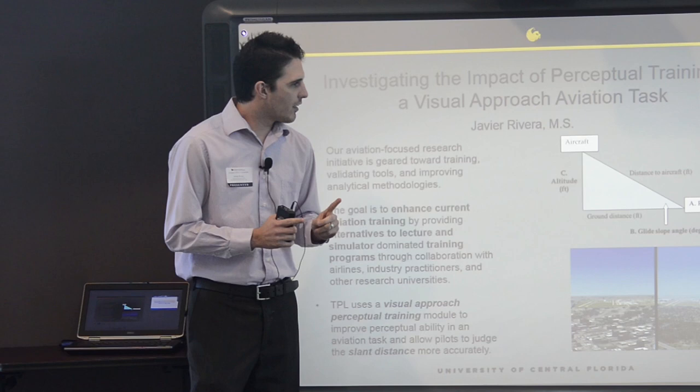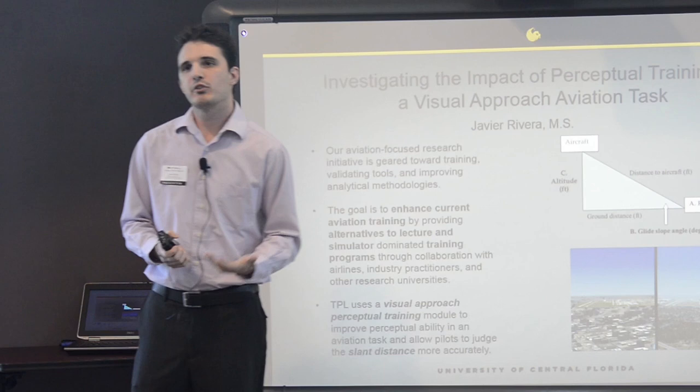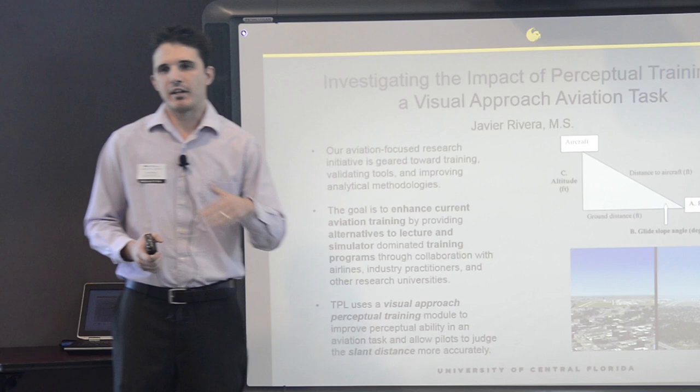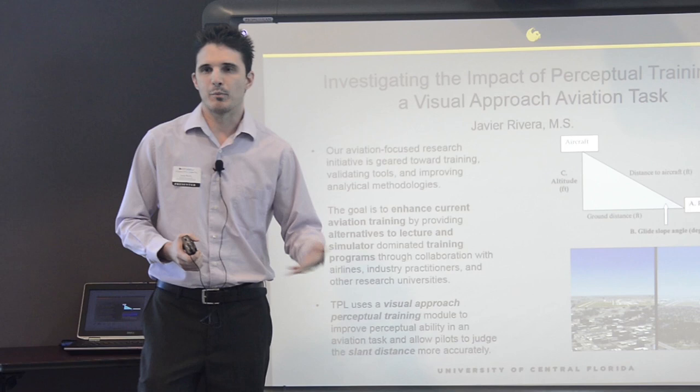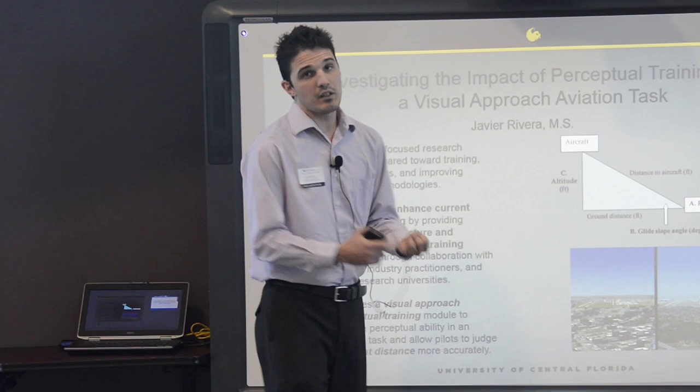Part of the problem is that the task is so visual that pilots use environmental cues to judge where they are in terms of the runway. Some of these cues, however, may distract them and influence the way they make these judgments. This causes their perceptual cues to be wrong, meaning they are not maintaining the right approach angle.